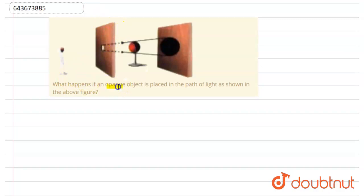happens if an opaque object is placed in the path of light as shown in the above figure?